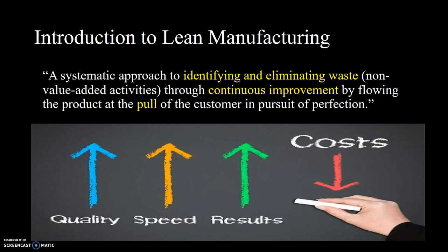According to the definition, lean manufacturing is a systematic approach to identifying and eliminating waste through continuous improvement, by flowing the product at the pull of the customer in pursuit of perfection. By eliminating waste through continuous improvement, we can improve quality, improve speed or time of production, improve overall efficiency of the machine or assets, and considerably reduce the cost associated with it.